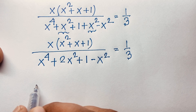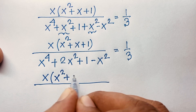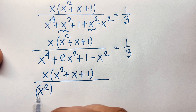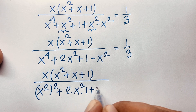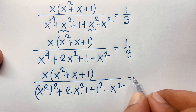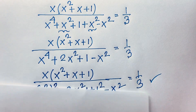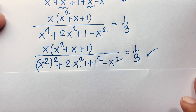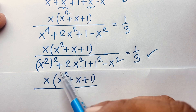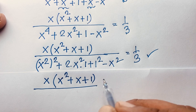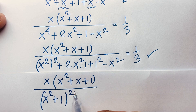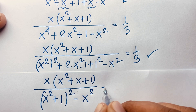In the denominator, x to the power 4 plus 2x squared plus 1 is a perfect square — it equals (x squared plus 1) whole squared, since (a + b)² = a² + 2ab + b². So the denominator becomes (x squared plus 1) squared minus x squared, which equals 1 over 3.